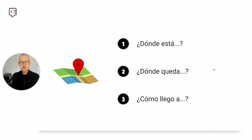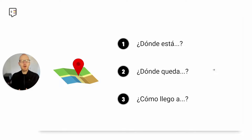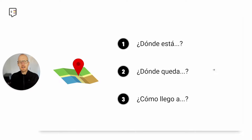You can use either of these three structures. ¿Dónde está? — where is it, where something is. Or ¿Dónde queda? — both the verb quedar and estar mean the same thing, basically where something is located. And the third one would be ¿Cómo llego a? — how do I get to? The verb llegar means to get to a place.